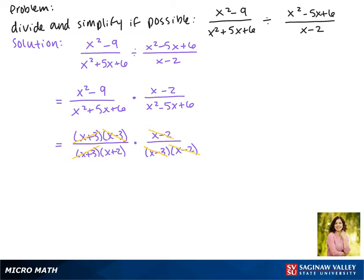Now what's left is our answer. All we have is an x plus 2 in the denominator so we have to write it as 1 over x plus 2. And that is our simplified answer.